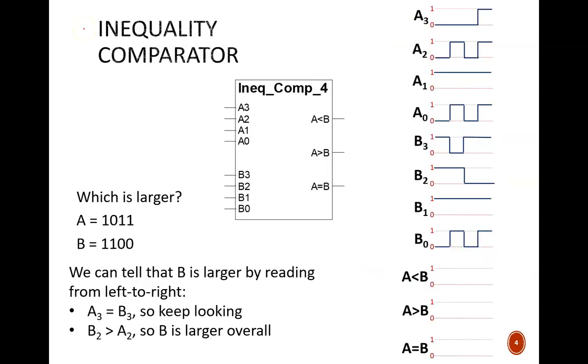The next device is a 4-bit inequality comparator. Its function is to determine whether two inputs are equal and, if not, which one is larger, assuming unsigned binary inputs. This one is easier to interpret with a numeric example. Given these values for A and B, which one is larger?